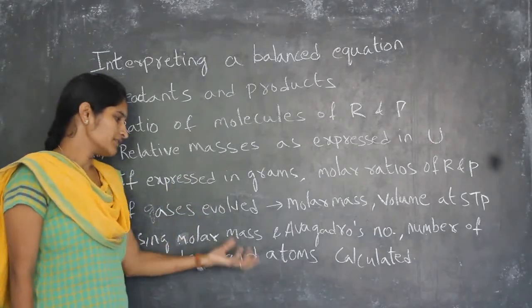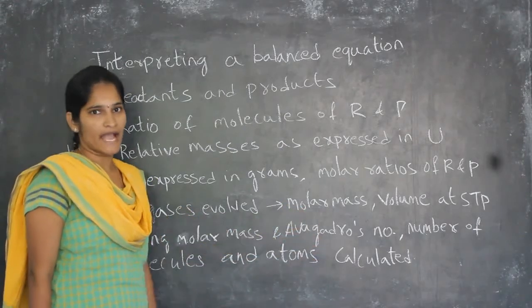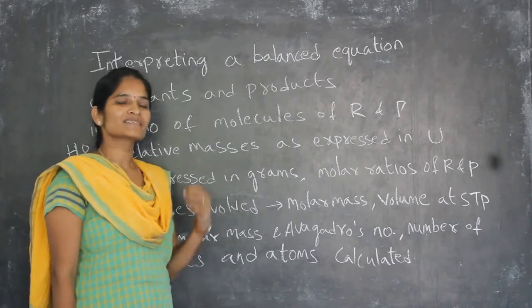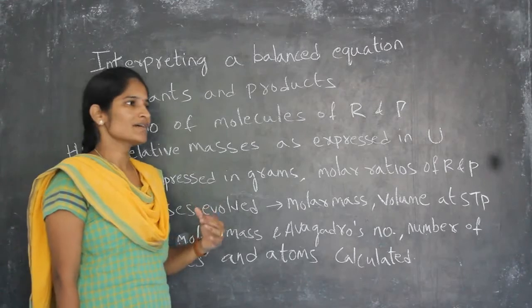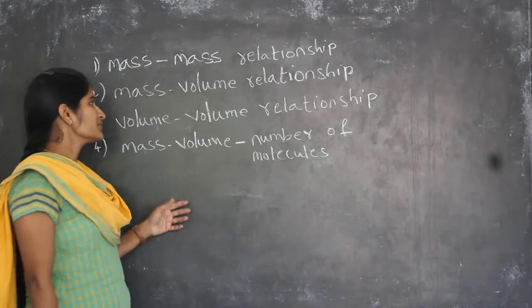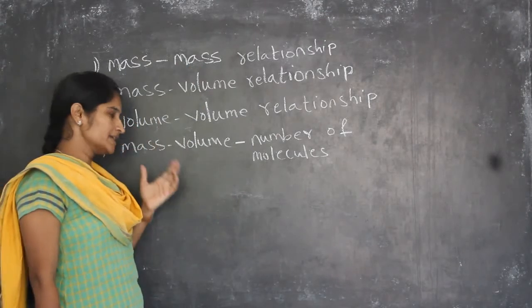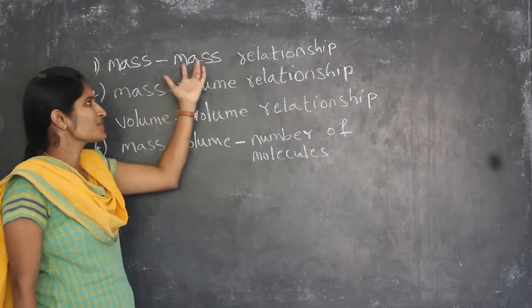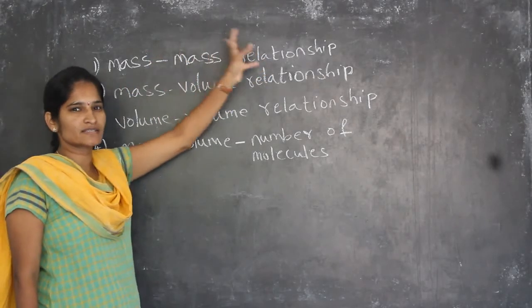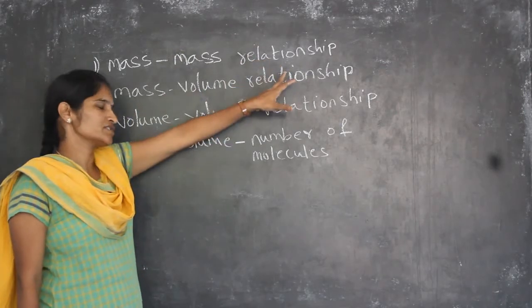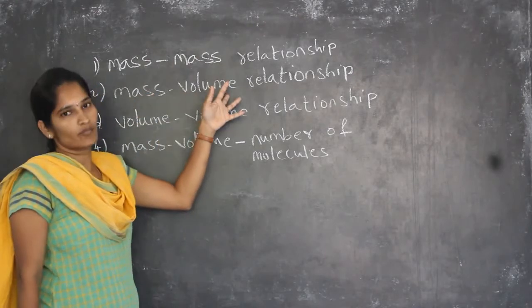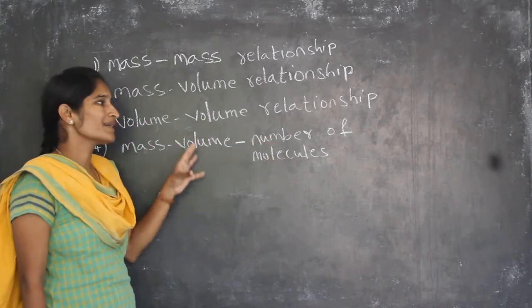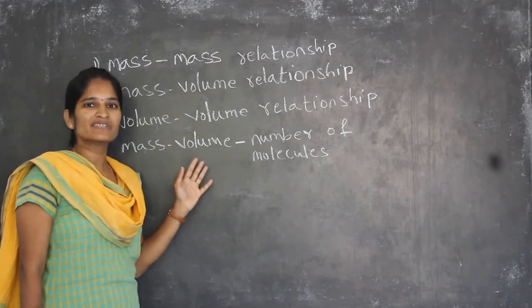An equation can give information about the relative masses of products and reactants. I can represent it as a mass-mass relationship, volume-volume relationship, mass-volume relationship, and also a mass-volume and number of molecules relationship. Now we will see what these relationships mean and look at examples.